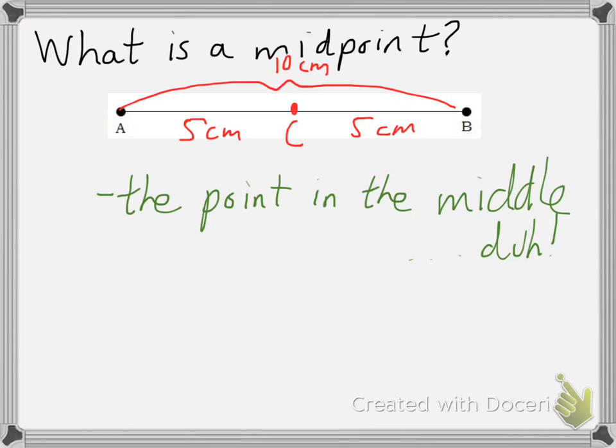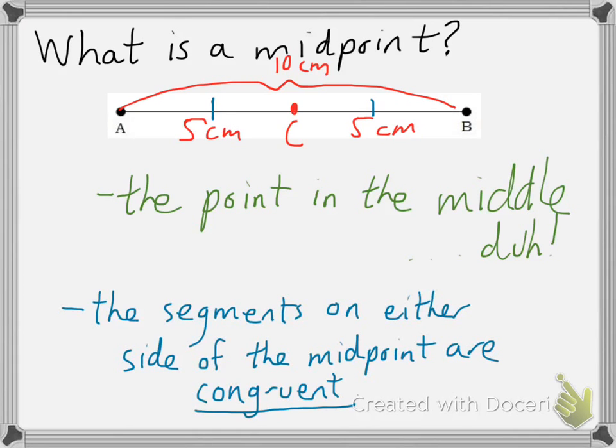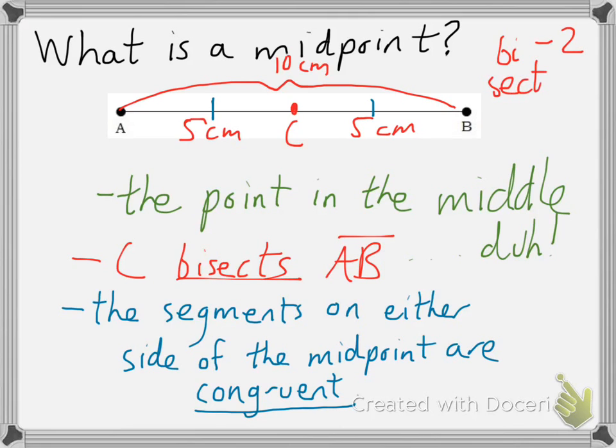Simply stated, that means that we know that the segments on either side of C are congruent. Another way to say this, in this case, is that C bisects segment AB. We've talked about this word in class before where we have bi, meaning two, and sect, meaning section. So, this line segment has been cut into two equal sections. It has been bisected. Now we have the basics.